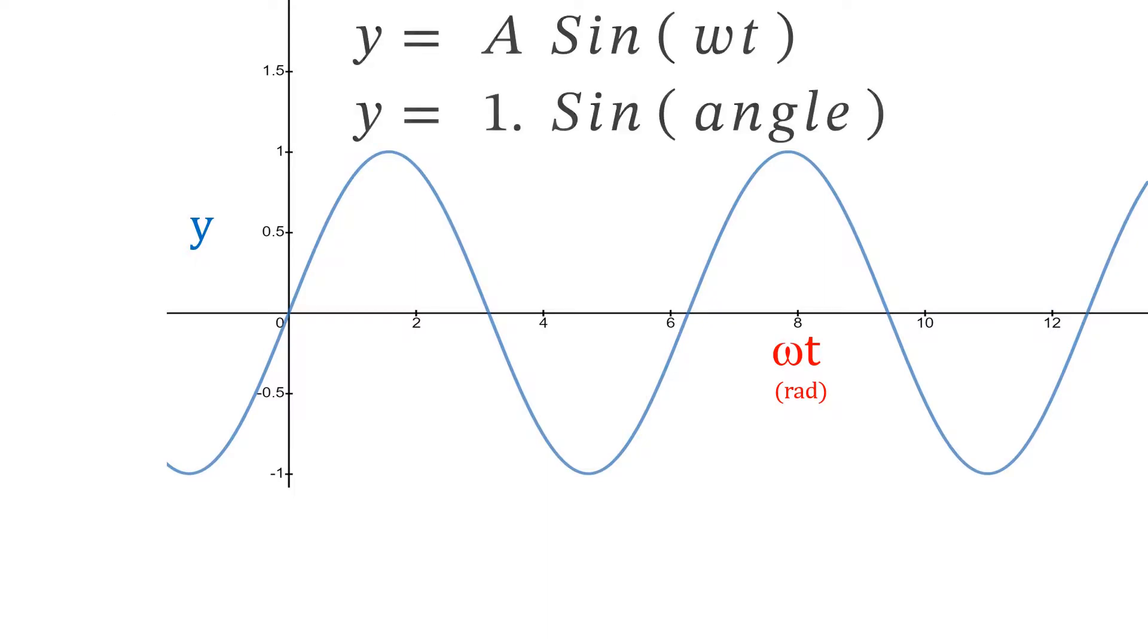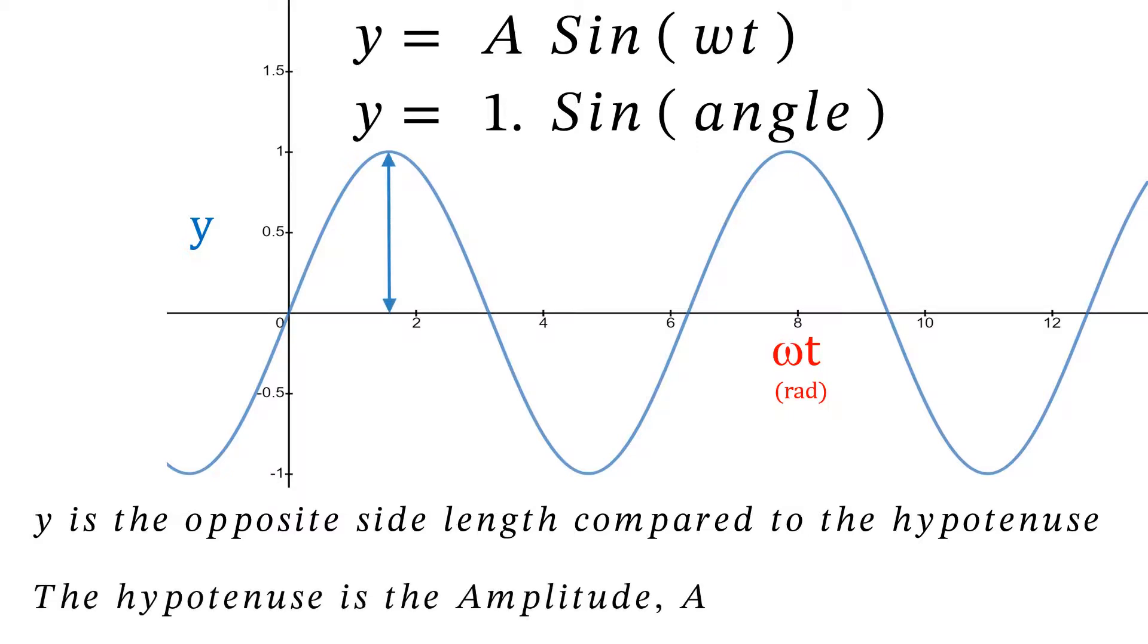Y equals A times the sine of omega t, where A is the amplitude. Y is the opposite side length compared to the hypotenuse, and the hypotenuse is the largest value or the largest side of the triangle.